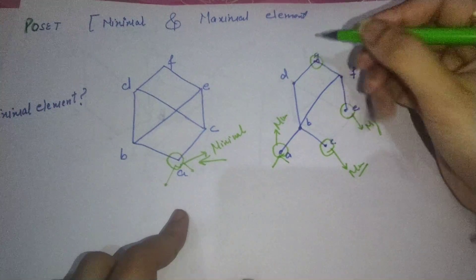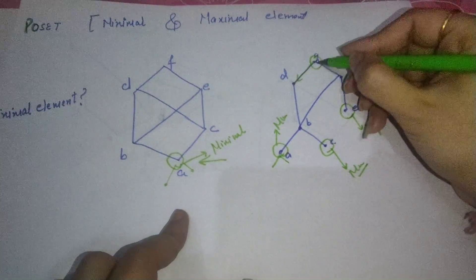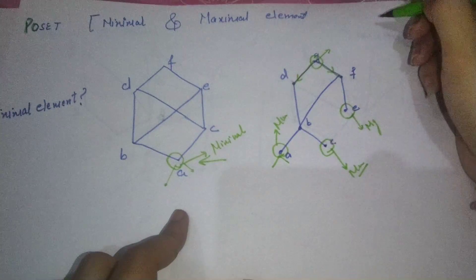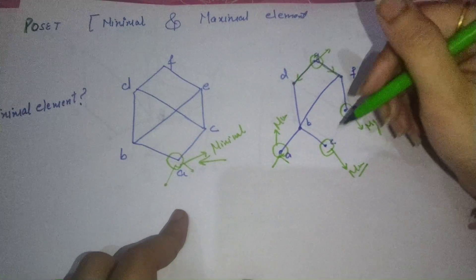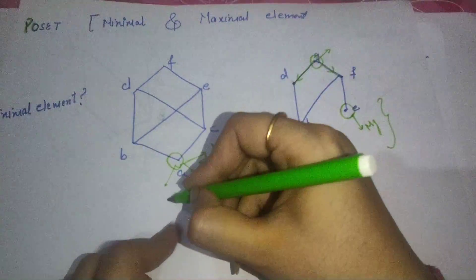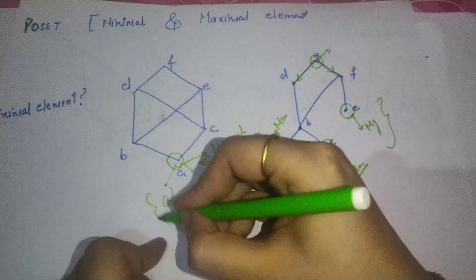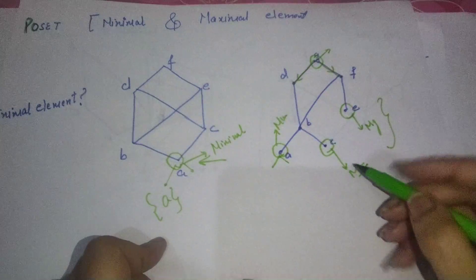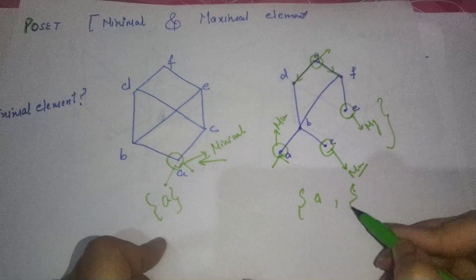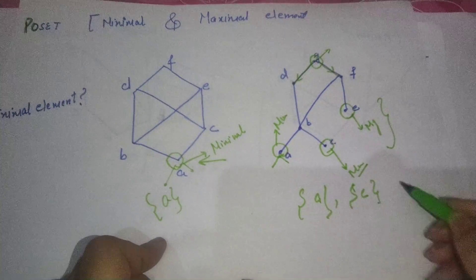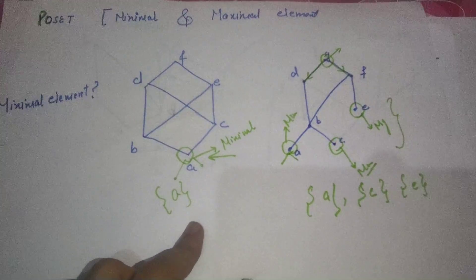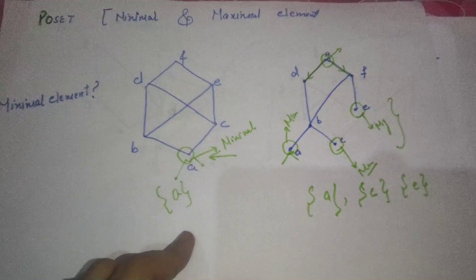Then G — this is a relation, so G cannot be a minimal element. Minimal elements are found at the base. So here your minimal elements are A, C, and E.